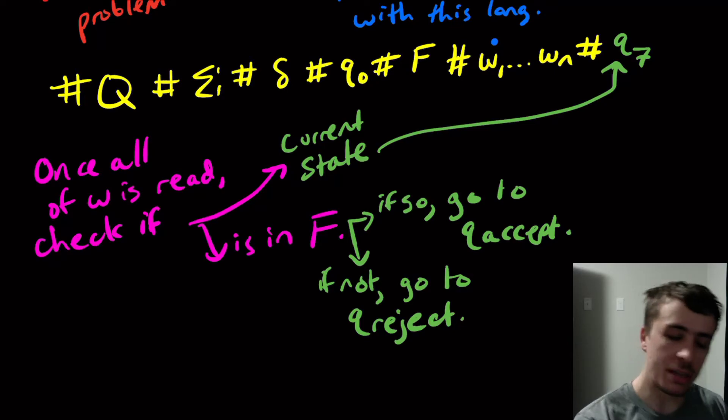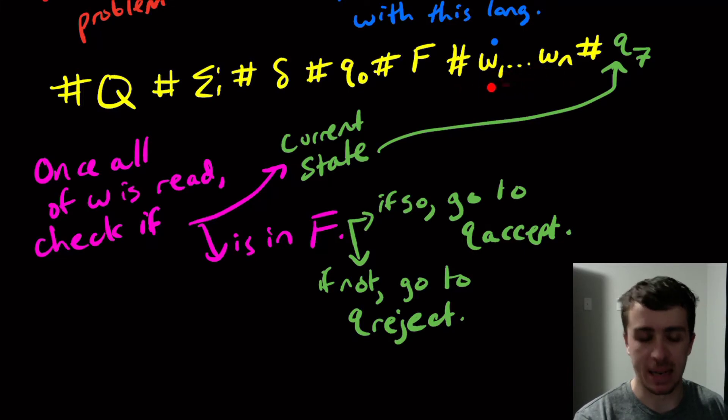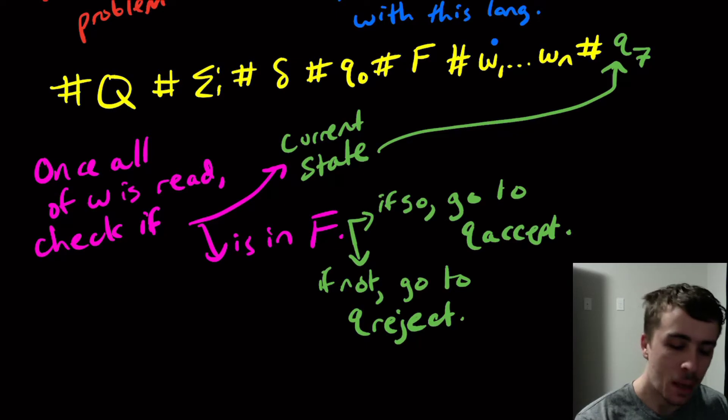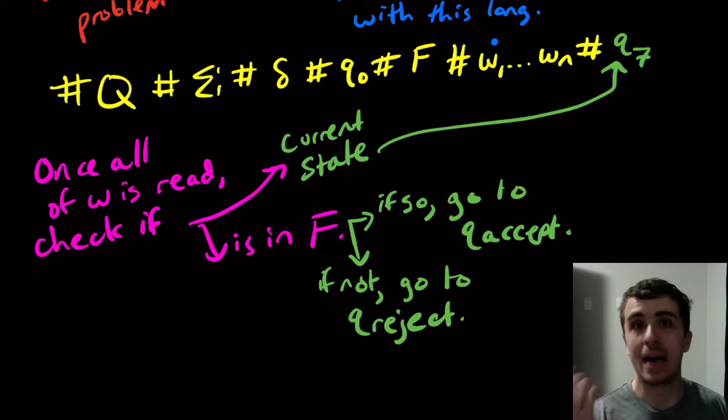And you can argue that this machine runs in a finite amount of time, because we are always consuming one character of this finite length input right here. And therefore, since there's only a finite number of characters in here, that part takes finite time. We have to zoom back and forth across this big input. But I argue that that runs in a finite amount of time too, because this whole thing is finite. And we only have a finite number of characters to do it for. And there are only a finite number of other operations we need to do like checking if it's in f and whatnot. So I argue that it actually is a machine that always halts. And then therefore, A sub DFA is decidable.